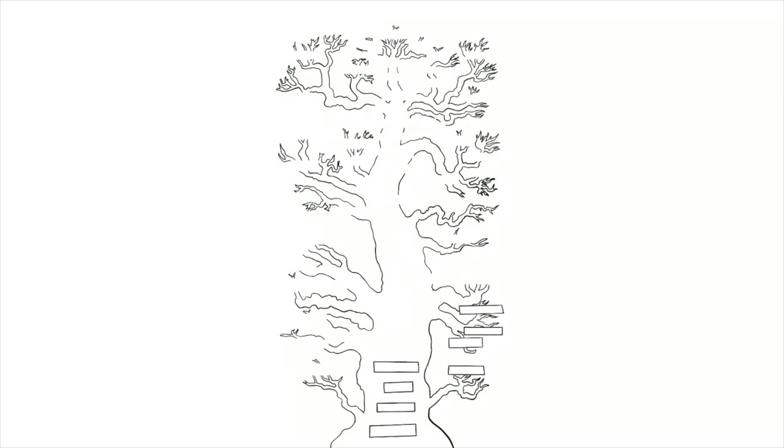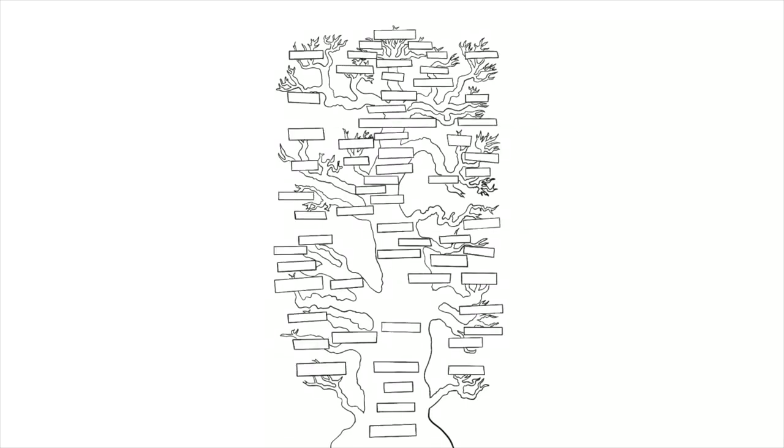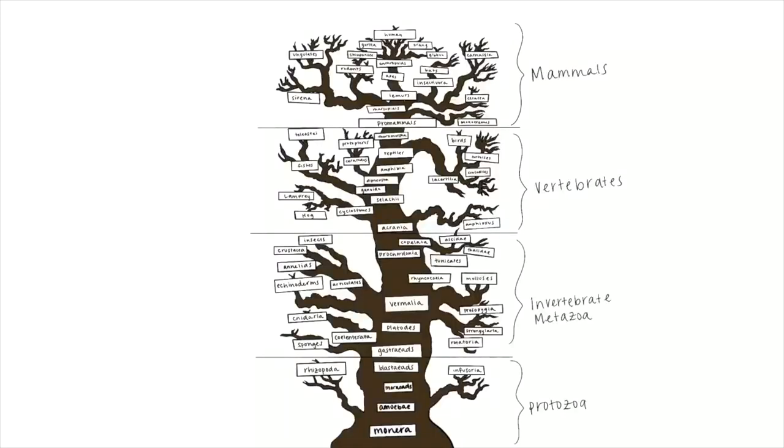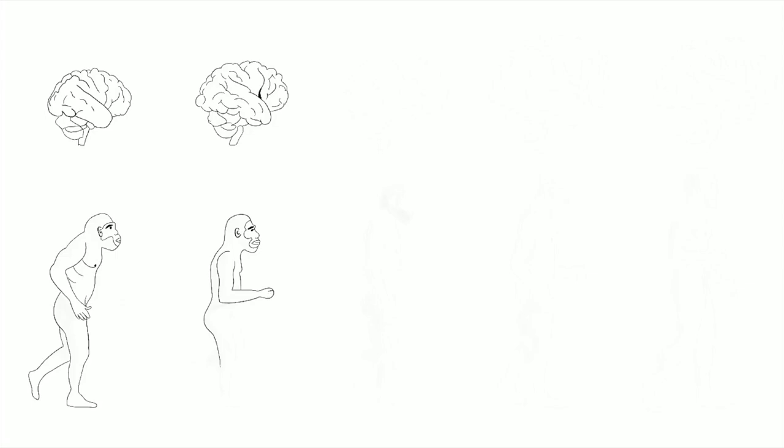Evolution is often termed descent with modification and is defined as the change in the characteristics of a species over time, relating back to a common ancestor. The theory relies heavily on the process of natural selection to select for the most favorably fit traits. Through evolution, human brains have developed into a feat of genetic excellence, giving humanity the ability to walk, work together, and communicate.